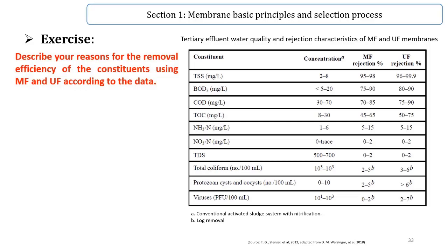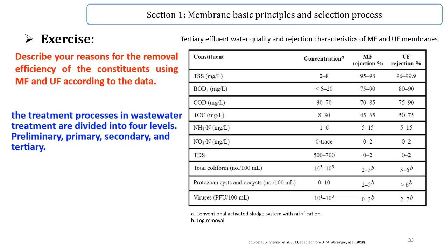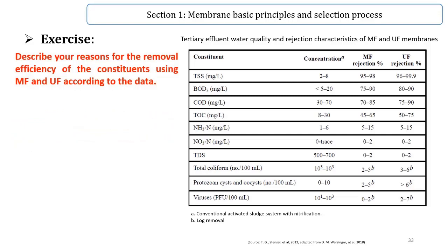Describe the removal efficiency of the constituents using microfiltration and ultrafiltration according to the presented data in the following table. This is a tertiary effluent water quality data. First, I have to say that the treatment processes in wastewater treatment are divided into four levels: preliminary, primary, secondary, and tertiary.